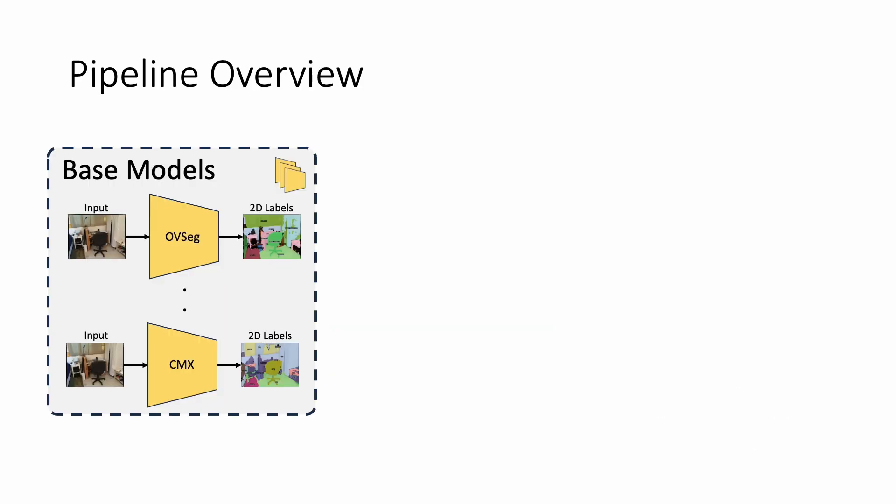Let us now have a look at the pipeline. Our pipeline consists of three stages. The first stage consists of an ensemble of different state-of-the-art 2D and 3D semantic prediction models. We combine the best available single frame RGB and RGBD models together with the best 3D point cloud based models and open vocabulary segmentation models that perform especially well on long tail categories. Each pre-trained model consumes the RGBD input frame or point cloud and predicts an individual semantic map. These predictions are then passed to the next stage.